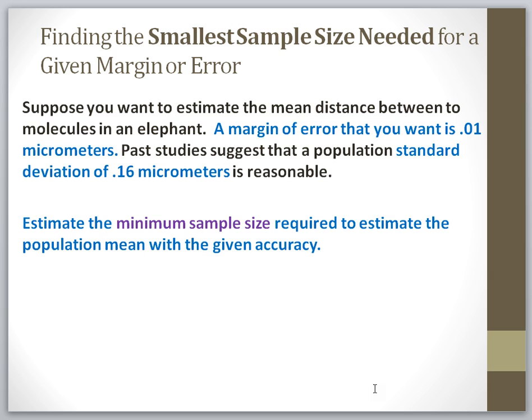Now the margin of error is very dependent upon the problem itself, because a margin of error of 1 wouldn't work very well at all if you were creating a new pharmaceutical drug that had to be within 0.00001 tolerance so that nobody died. So again, your margin of error is completely dependent on the problem that you're working on, the application, and how close you need to be to what the population parameter would be. But in order to calculate the smallest sample size that you need, you have to determine what margin of error you want first.